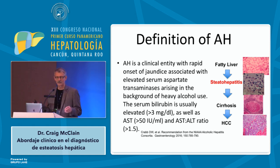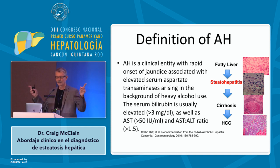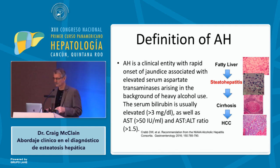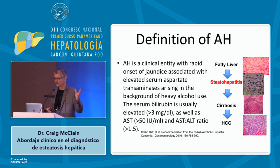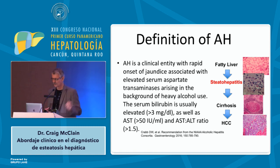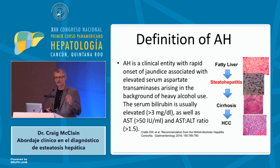Alcoholic hepatitis has a working definition from our NIAAA-funded Alcoholic Hepatitis Consortium. It's a clinical diagnosis: a clinical entity with rapid onset of jaundice associated with mildly elevated liver enzymes and heavy alcohol use. Bilirubin is usually greater than 3 for mild and greater than 5 for severe disease, with a mildly elevated liver enzyme pattern where AST is greater than ALT.